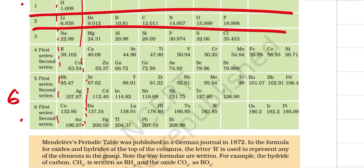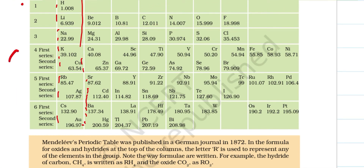In the first group and first period he placed Hydrogen. In the second group and first period is Lithium. Then in the second period: Beryllium, Boron, Carbon, Nitrogen, Oxygen and Fluorine, arranged according to increasing atomic masses. In the third period and first group you have Sodium, then Magnesium, Aluminium, Silicon, Phosphorus, Sulphur, and Chlorine.